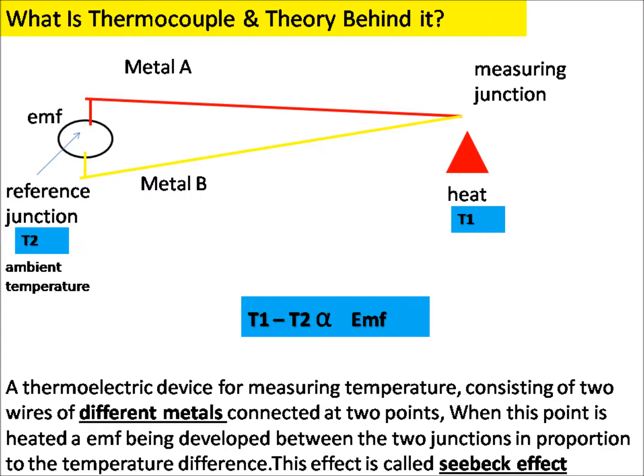In figure 1, metal A and metal B are dissimilar metals connected at a point called the measuring or hot junction. When this junction is heated, an EMF is induced which is directly proportional to the temperature difference between the two junctions. Remember: a thermocouple does not measure the exact process temperature — it measures the difference between the exact temperature minus the reference temperature, which is the ambient temperature. To get the exact process temperature, you must add the ambient temperature.